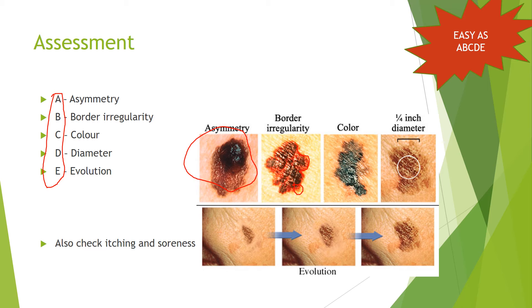The C stands for color. You can tell that it's very dark in the middle and then transitions to a tanner color. The most important part is that it's not a uniform color from one side to the next. The D stands for diameter — we're looking for something over a quarter inch in diameter, which can also be a sign of melanoma.